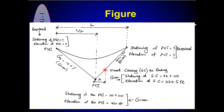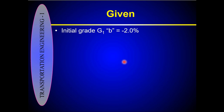The additional information is that the street crossing the roadway is at station 1112 at elevation 424.5 feet. The distance of this point from the PVI is two stations, calculated as the difference between station 1112 and station 1110. Therefore, the distance of this point from the PVC is equal to L/2 plus 2 stations.